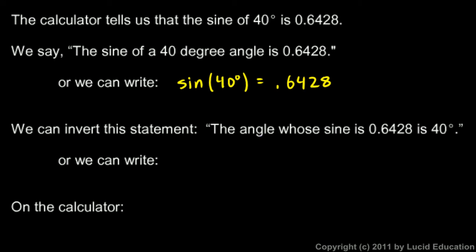And mathematically, we would write that like this. The inverse sine of 0.6428 is equal to 40 degrees. So, in this case, we have the sine of the angle here, and this is the angle.